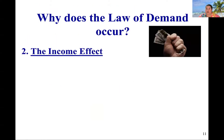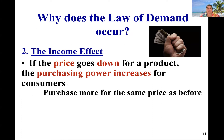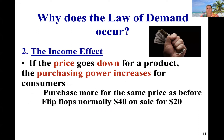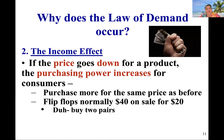Next, the income effect. If the price goes down for a product, the power of your dollar increases — you can purchase more for the same price you were willing to pay before. So if flip-flops are normally $40 and they're on sale now for $20, because I was willing to spend $40 for one pair, I'm going to buy two pairs. As the price decreases, your purchasing power increases.